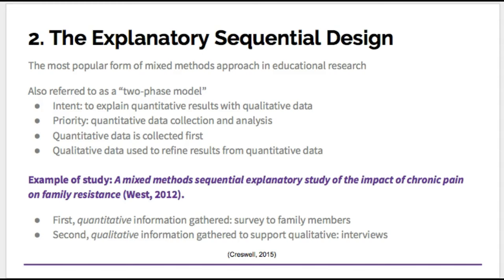Though not related to education, the research example — study and impact of chronic pain and family resistance — perfectly highlights the order in which the explanatory sequential design takes place. The first step was to distribute and collect surveys from family members of those with chronic pain. Family members used responses that could be easily quantified and sorted, such as I disagree, slightly agree, agree, or slightly disagree. Afterwards, the same individuals were asked a series of interview questions to elaborate on their own personal experiences. These interviews were used to explain and support the quantitative data collected from the surveys in order to draw a conclusion.